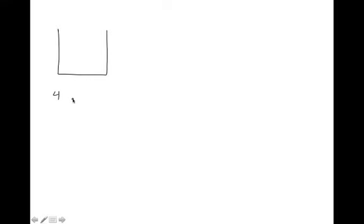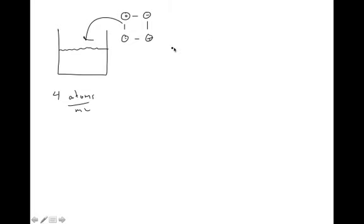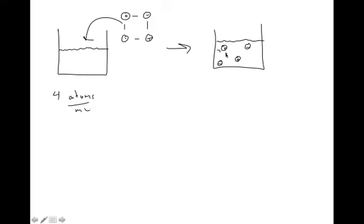Let's look at a saturated situation with the same example. Our solubility is four atoms per milliliter. Let's say I've got a crystal that contains four atoms — positives and negatives — and I've still got my one milliliter of water. I put that in there, and all four of those ions will dissociate from one another, spread out, and be surrounded by water molecules.